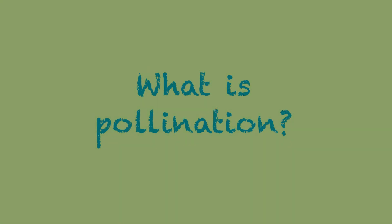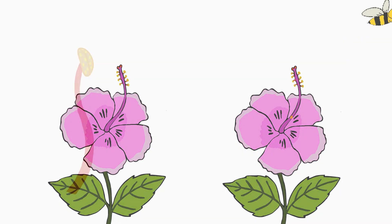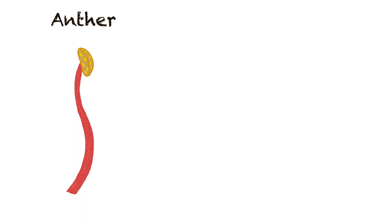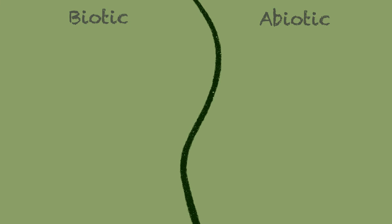So, what is pollination? It simply means pollen is transferred from the anther, the male part of a flower, to the stigma, the female part of a flower. This happens through pollinating agents that aid in reproduction. Pollinating agents are primarily divided into biotic and abiotic.